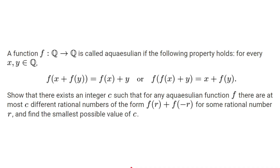Here's the problem statement. A function f from the set of rational numbers to the set of rational numbers is called aquazillion if the following property holds: for every rational number x and y, f(x) + f(y) = f(x+y), or f(f(x)+y) = x + f(y). Show that there exists an integer c such that for any aquazillion function f, there are at most c different rational numbers of the form f(r) + f(-r) for some rational number r, and find the smallest possible value of c.